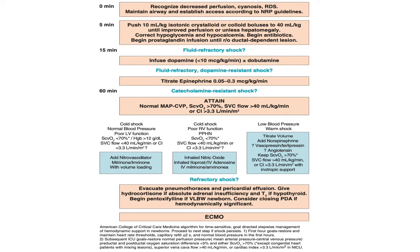At 15 minutes, if there is no effect despite multiple fluid boluses, we label it fluid refractory shock and start dopamine infusion at less than 10 microgram per kg per minute with or without dobutamine. If again there is no response, we call it fluid refractory dopamine-resistant shock, and we titrate epinephrine at a dose of 0.05 to 0.3 microgram per kg per minute.